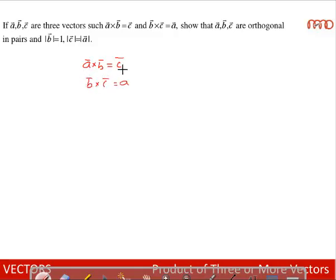As A cross B is equal to C, C is a vector which is perpendicular to both A as well as B. And as B cross C is equal to A, A is a vector which is perpendicular to both B as well as C. C is perpendicular to A, C is perpendicular to B, A is perpendicular to B, A is perpendicular to C.